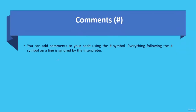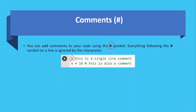You can add comments to your code using the hash symbol. Everything following the hash symbol on a line is ignored by the interpreter. In the example, you can see a comment starting from the hash. The variable definition is not part of the comment — the comment begins after the declaration.